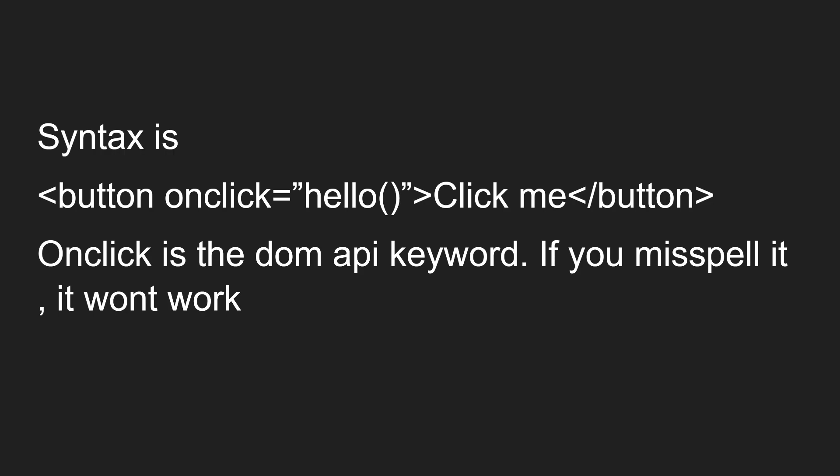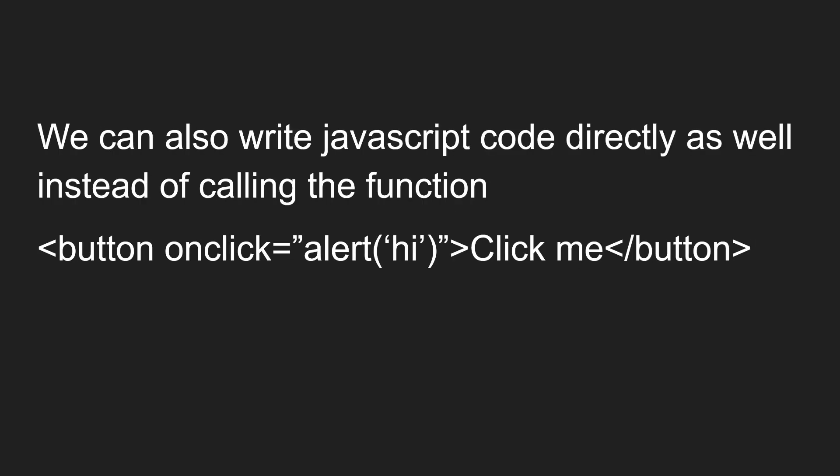The syntax — as we already know — is something like: button onclick="hello", with 'click me' as the button label. We write onclick directly as an attribute on the button element, and in the attribute value we provide a JavaScript function. onclick is a DOM API keyword, so if you misspell it, it will not work.